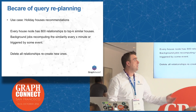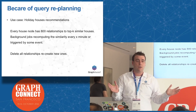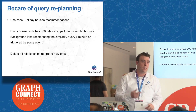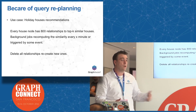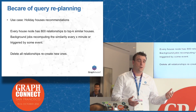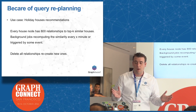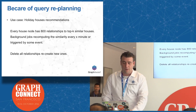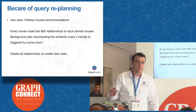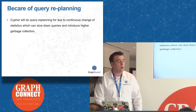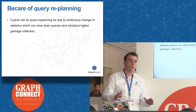A production use case we had recently involved holiday house recommendations. Every house node has 800 relationships to other houses based on similarity computations from click sessions, search features, and content-based recommendations. We were recomputing similarity in the background, deleting and recreating the top-K 800 similar relationships. In the Neo4j logs, you would constantly see 'query detected as stale, replanning.' There is Neo4j configuration to disable replanning.